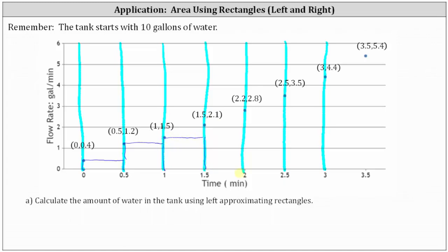For the fourth rectangle, the height will be 2.1. For the fifth rectangle, the height will be 2.8. And for the final sixth rectangle, the height is from the point on the left, giving a height of 3.5.